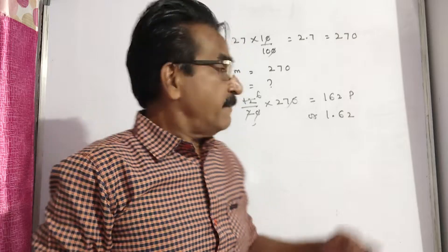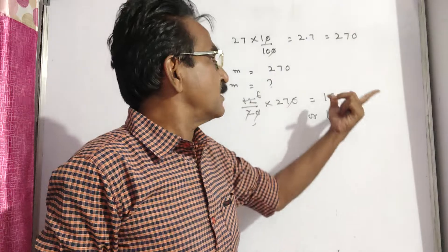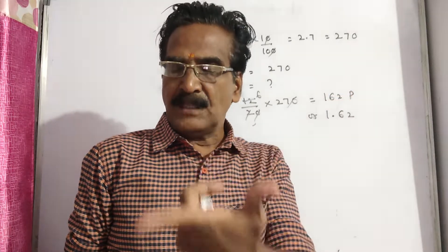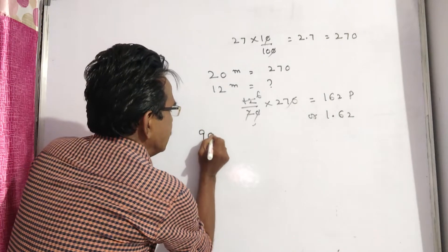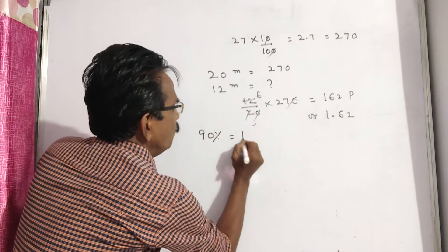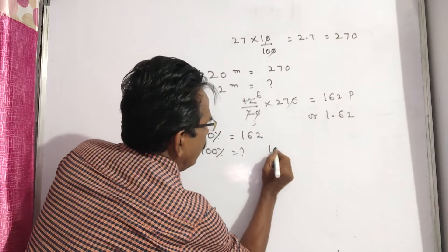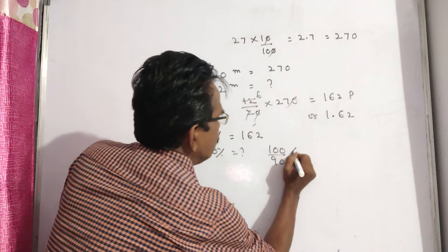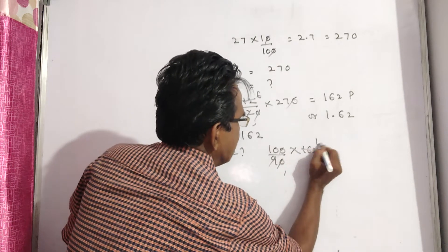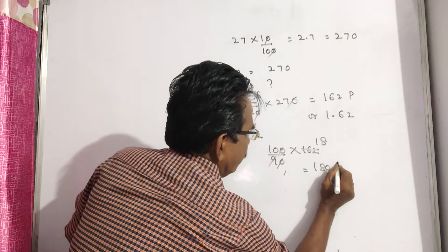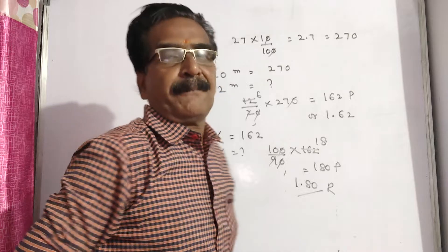Let us find the original price. A 10% reduction means 1.62 rupees, or 162 pies, is 90% of the original price. So 90% equals 162. What is 100%? It is 100 by 90 into 162. The zeros get cancelled, giving 162 divided by 9, which equals 180 pies, or 1.80 rupees. So the original price per dozen mangoes is 1.80 rupees.